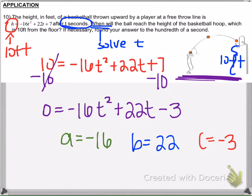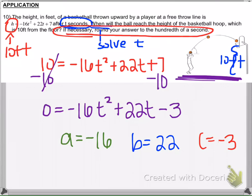If I look at the directions, it says: if necessary, round your answers to the nearest hundredths of a second. So that means if it doesn't come out to be a whole number, we're going to leave it as a decimal. Now I'm going to go ahead and use the quadratic formula and plug in these values.